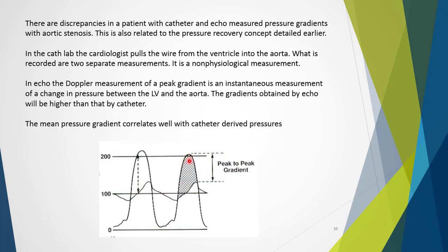The left ventricle peaks here, and the aorta peaks here — this is because the LV must generate significant force to push blood through the narrow aortic valve orifice. In echo, the Doppler measurement of peak gradient is an instantaneous measurement of the change between left ventricle and aorta. Therefore, a gradient attained by echo will be higher than by catheter. What correlates well with catheter-derived measurement is the mean pressure gradient by echo — a hemodynamic measurement we'll cover shortly.